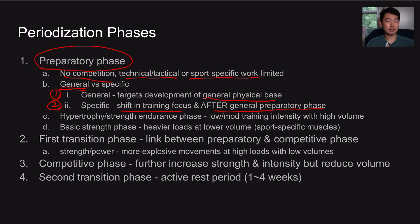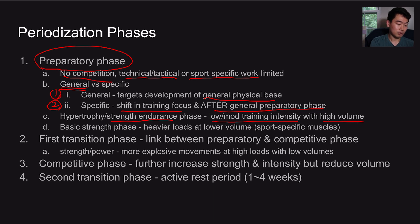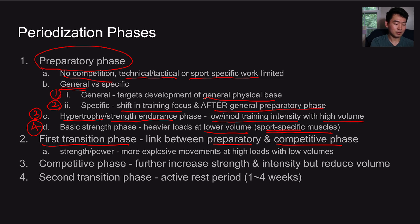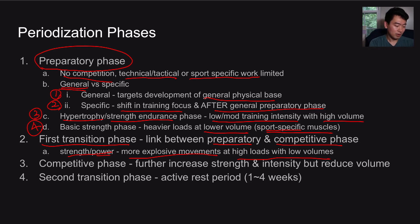You get the hypertrophy and strength endurance phase, with low to moderate training intensity but high volume, because what you're trying to achieve is hypertrophy and strength endurance. Then you get the basic strength phase — a heavier load at a lower training volume, specific to the muscles or movement patterns that the athlete requires for their sport. That is the first preparatory phase. Moving on to the first transition phase, which is the link between the preparatory and competitive phase, featuring power exercises with more explosive movements at high loads with low volumes.